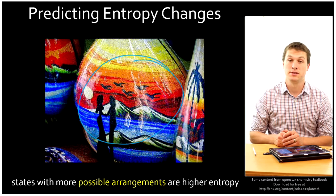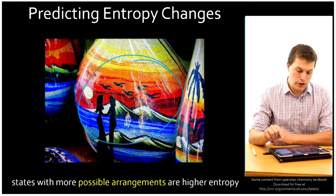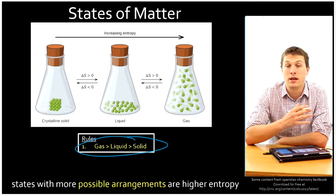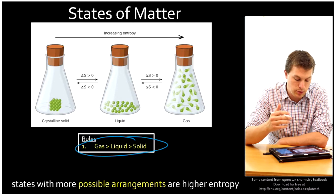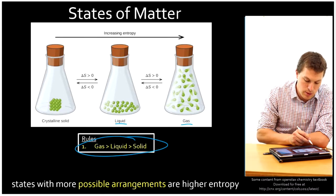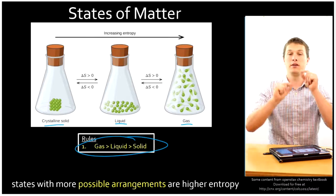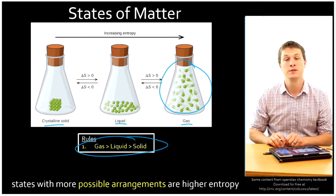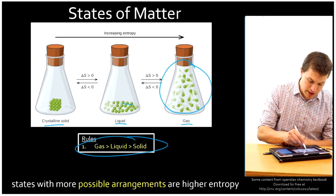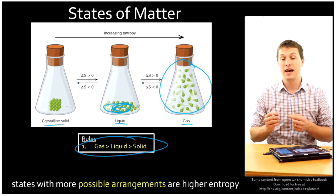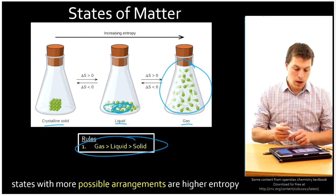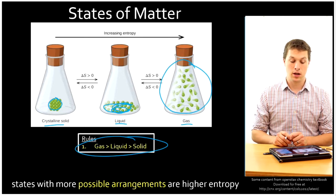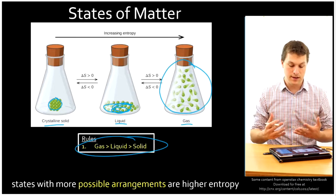Let's look at an example of a chemical system and think about it in this same way. The first thing we're going to look at is states of matter. Gas has a higher entropy than liquid, which has a higher entropy than crystal and solid. My gas molecules are free to roam the entire flask — tons of different arrangements, hence higher entropy. My liquid can still float around but has to stay in the bottom of the flask, fewer arrangements, hence lower entropy. The solid has to stay in a rigid structure — even fewer arrangements, making it lowest in entropy. So the first rule is: gas is the highest entropy, then liquid, then solid.